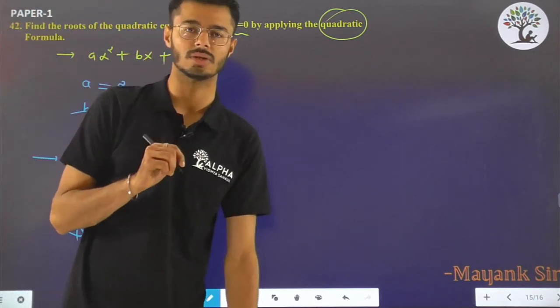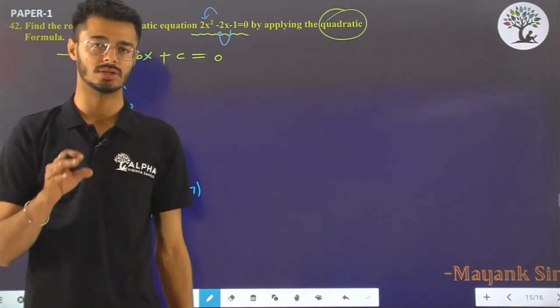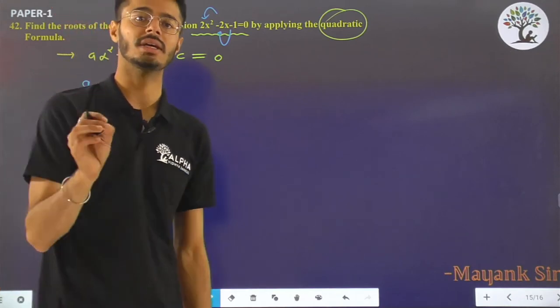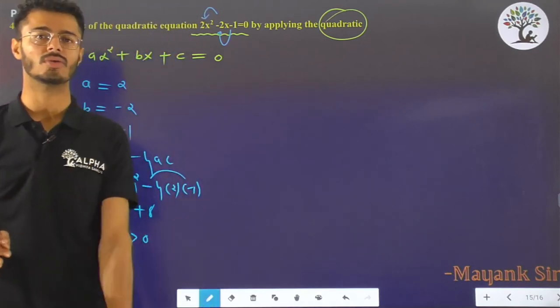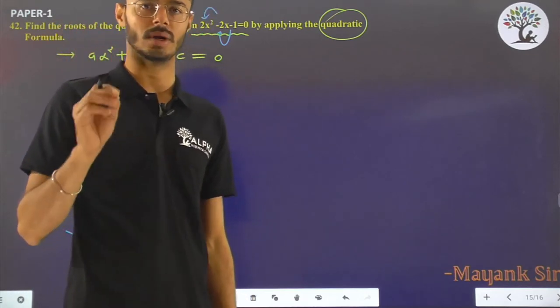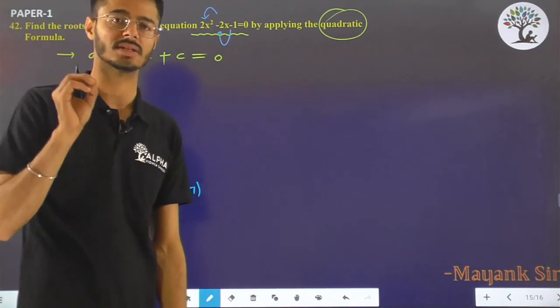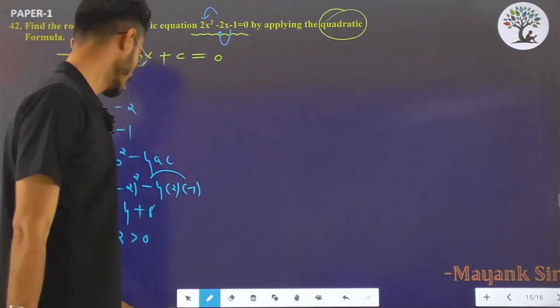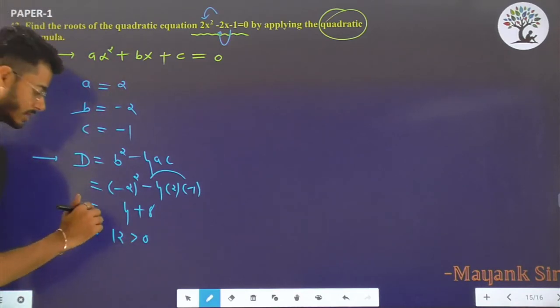In case D > 0, roots are real and distinct. D = 0, in this case roots are real and equal. D < 0, real roots do not exist. Not only roots do not exist—roots exist, but real roots do not exist. In case D < 0, roots exist, but in class 11 there is a chapter on complex numbers. D is greater than 0, that is 12.